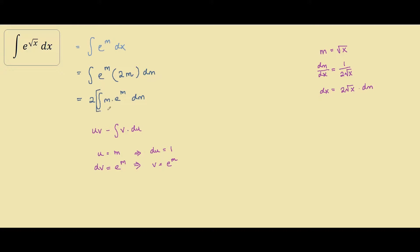Putting this all back into the formula, we have 2 times uv, which is m times e to the m, minus the integral of v times du, which is e to the m times 1. Expanding this out we have 2m e to the m minus 2 times the integral of e to the m, which gives 2m e to the m minus 2e to the m plus c.